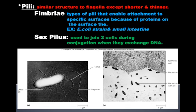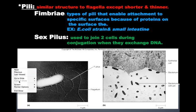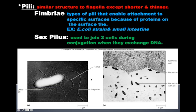Pili can be in the form of fimbriae — pili that enable attachment to specific surfaces because of proteins on the surface of the pili. We can see a bacterium whose pili are literally attaching to surface epithelial cells, enabling them to get inside tissue. The bad E. coli O157:H7 strain does that with the small intestine.